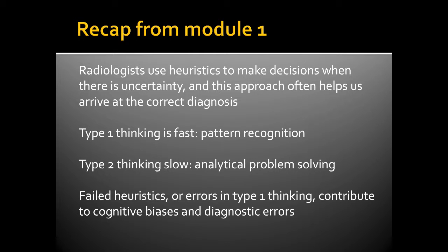Type 1 thinking is fast, like pattern recognition. Type 2 thinking is slow — it's analytical problem solving. Failed heuristics, or errors in Type 1 thinking, contribute to cognitive biases and diagnostic errors.